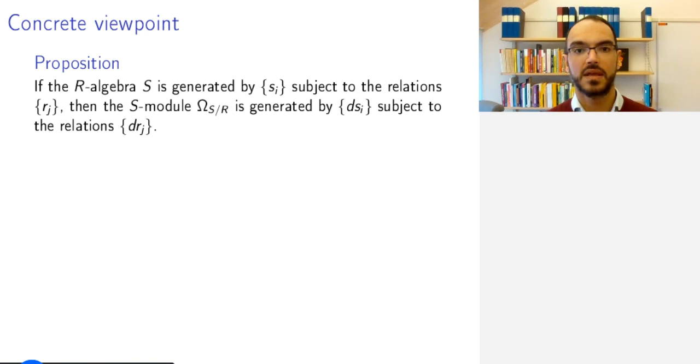If I want to view this module concretely as a module defined by generators and relations, suppose my R-algebra S is generated by a set {s_i} of generators, finite or infinite, subject to relations {r_j}. So r_j are polynomials—basically, this is saying that S is the R-algebra generated by these s_i subject to the ideal generated by r_j.